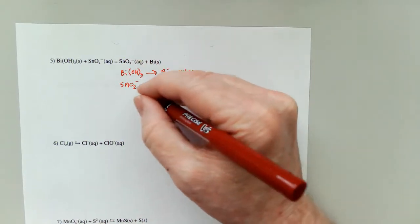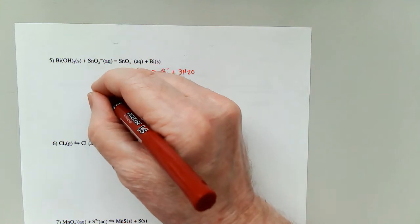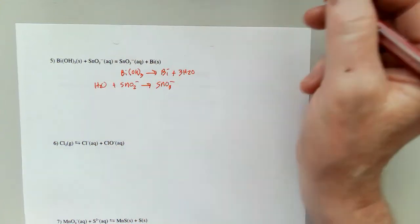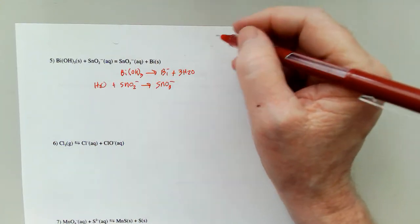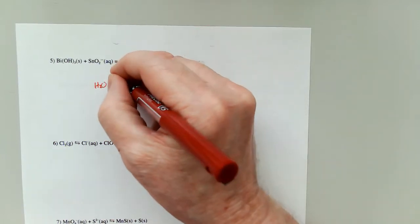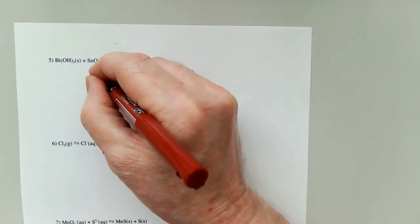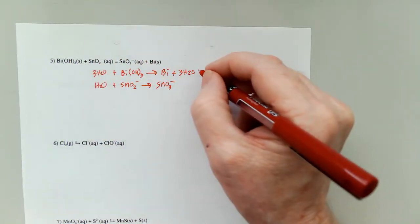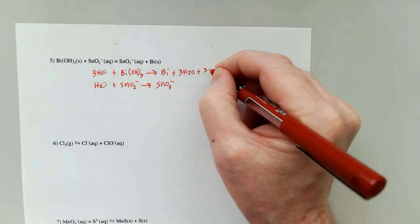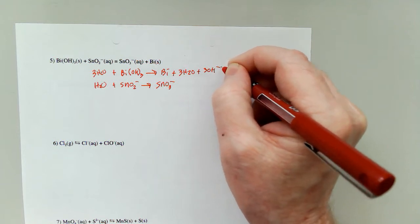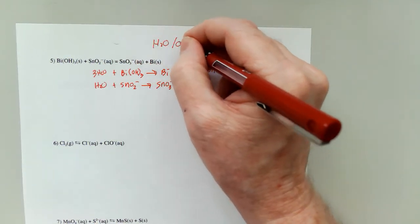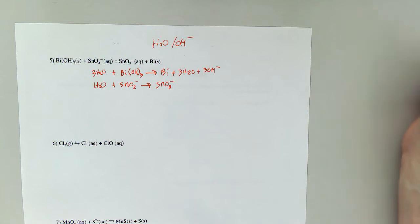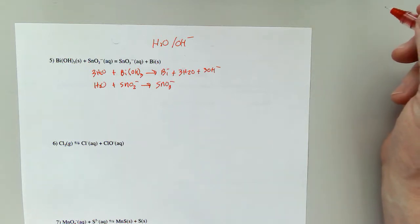Three oxygens, two oxygens, so I add one water. Now two times three is six hydrogens and I've already got three. So I'm going to add three waters and on the other side three hydroxides. Remember this is where we're adding H₂O and OH⁻ at the same time, on opposite sides of the equation.